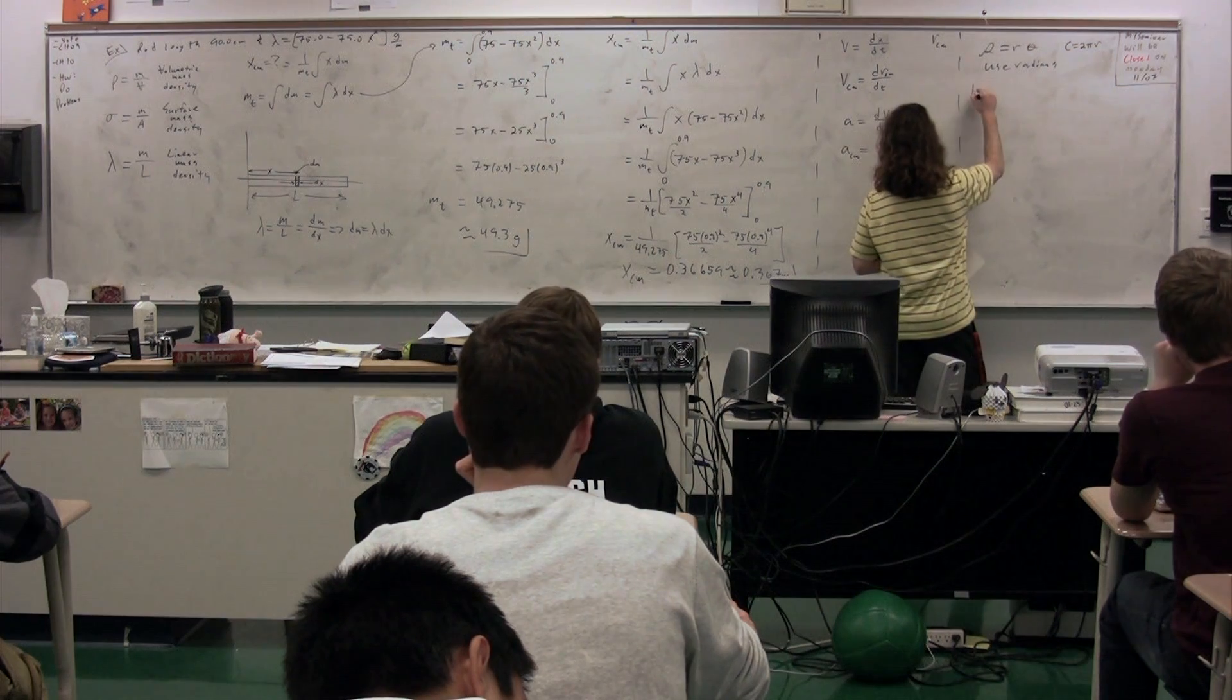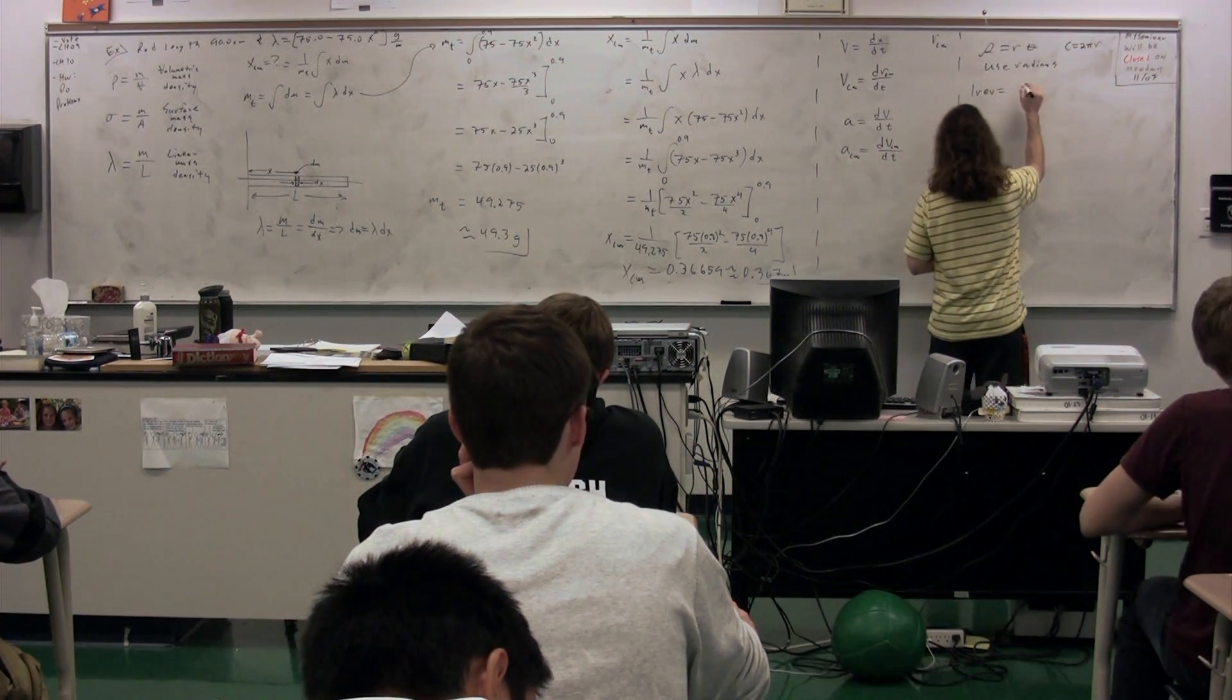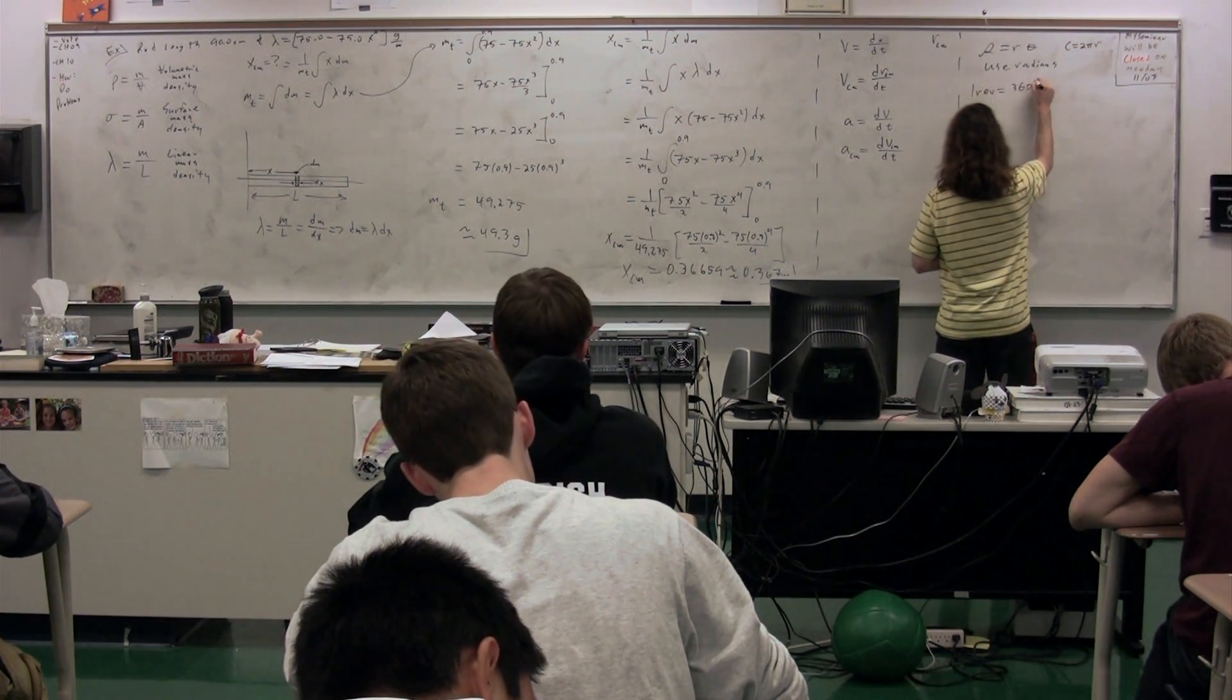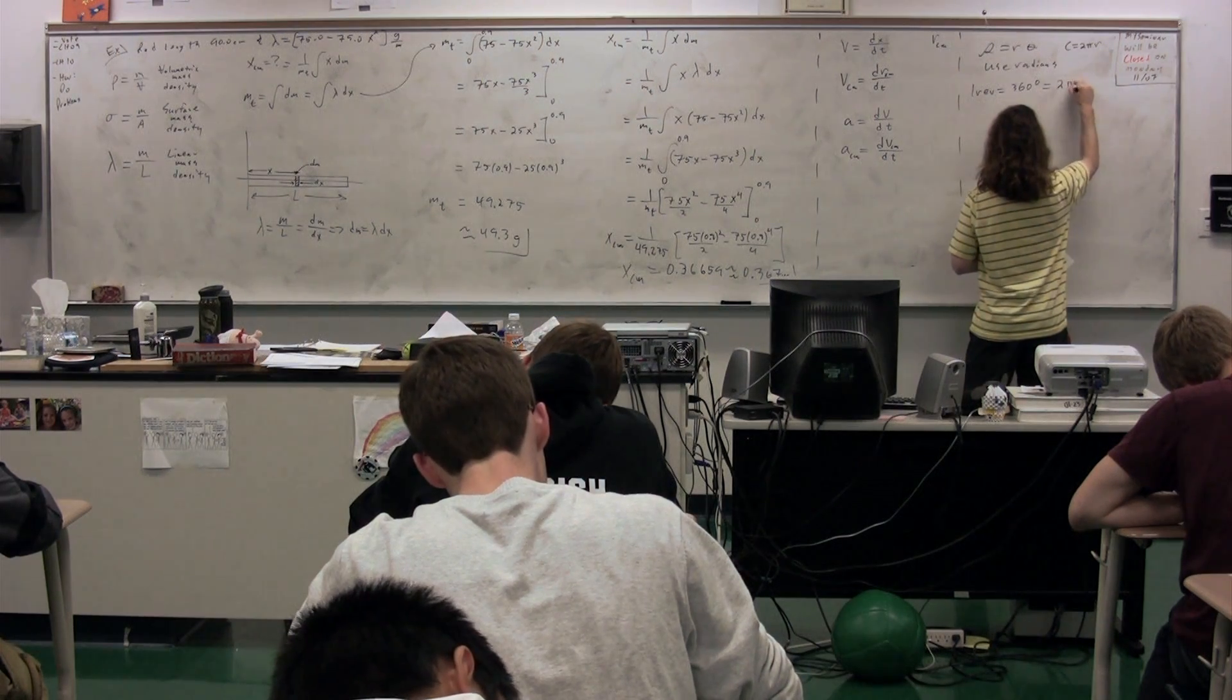One revolution equals how many degrees? 360. 360 degrees equals how many radians? 2 pi radians.